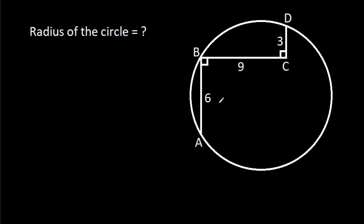In this video, we have been given that AB is 6, BC is 9, CD is 3, and we have to find the radius of the circle.